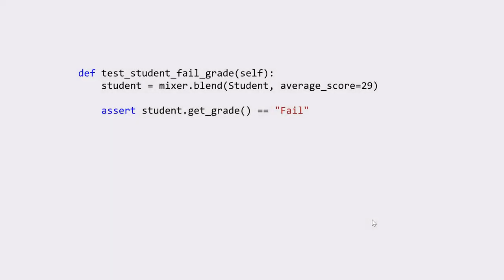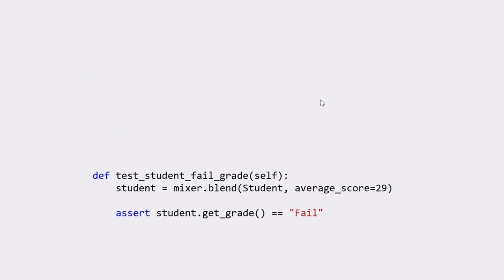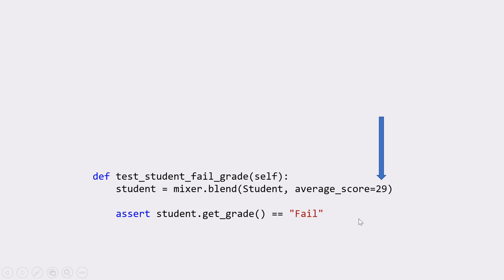Currently we have 100% code coverage and according to our tests all our code is okay — but is it really? For example, we have a test checking if a student has failed, and in our models we said any student who gets below 40 marks is a fail. The problem is the value we're passing — this 29 — is always a static value. It never changes, and our test will always only test this one value.